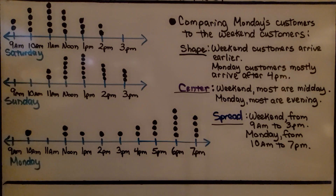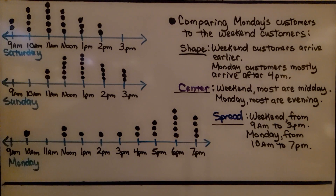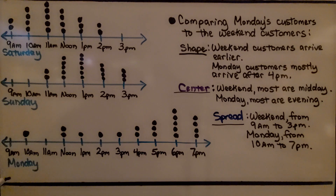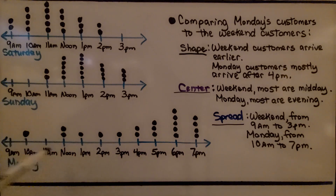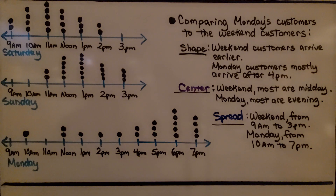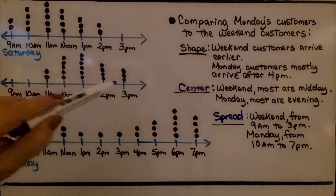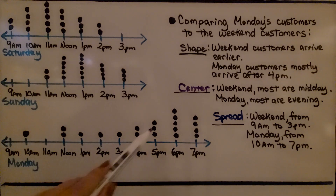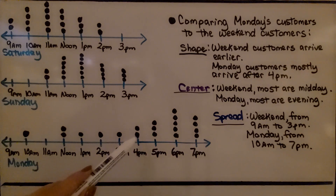Now here we have three dot plots. These are the Saturday customers and the Sunday customers we just used, but now we have Monday. There are more places for data values on Monday — it goes to 7 p.m. So we can compare two dot plots even if they have different data values. Comparing Monday's customers to the weekend customers: for the shape, the weekend customers arrive earlier — before 2 p.m. and before 3 p.m. — while on Monday the majority are arriving 4 p.m. and later.